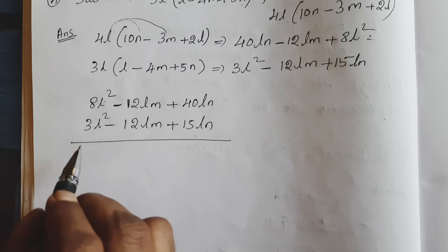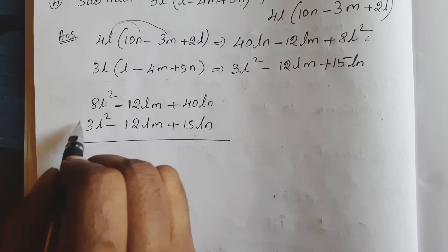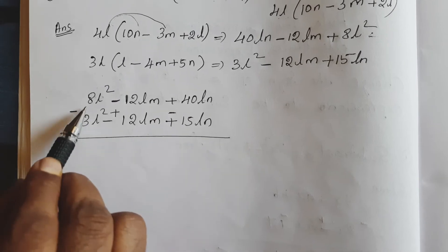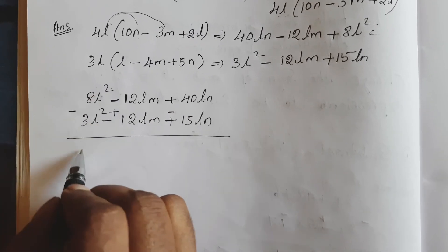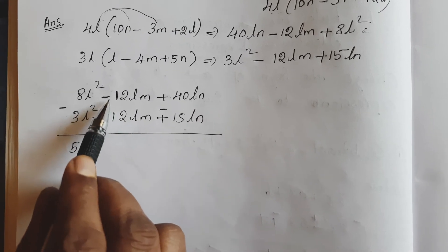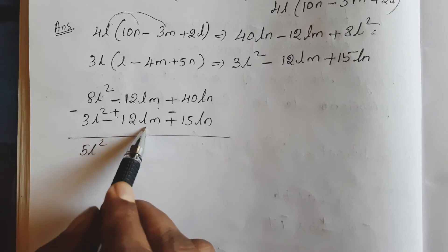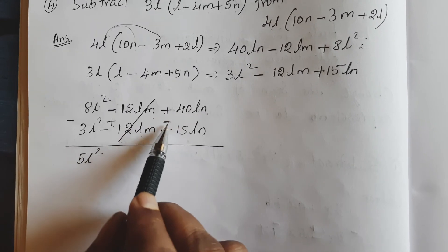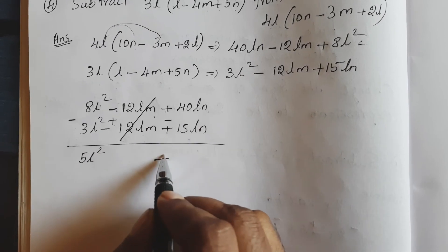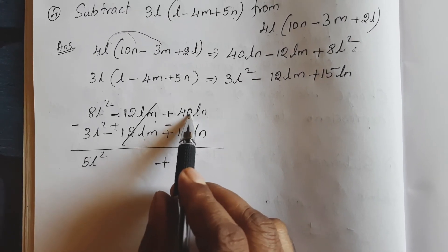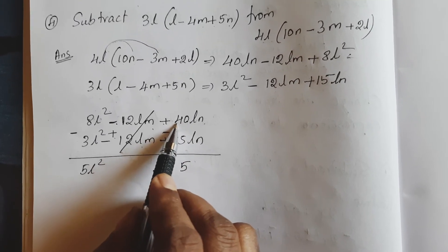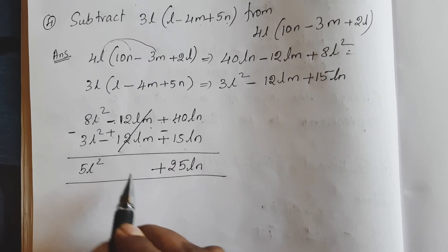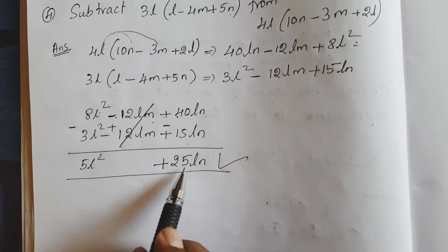Now performing subtraction — change the sign: positive becomes negative, negative becomes positive, positive becomes negative. So: 8l square minus 3l square gives 5l square. Minus 12lm and positive 12lm cancel out. Plus 40ln minus 15ln: positive sign, 40 minus 15 gives 25ln. So the final answer is 5l square plus 25ln.